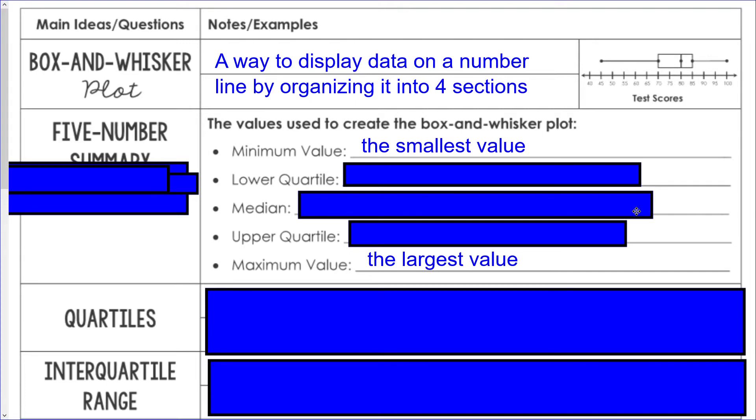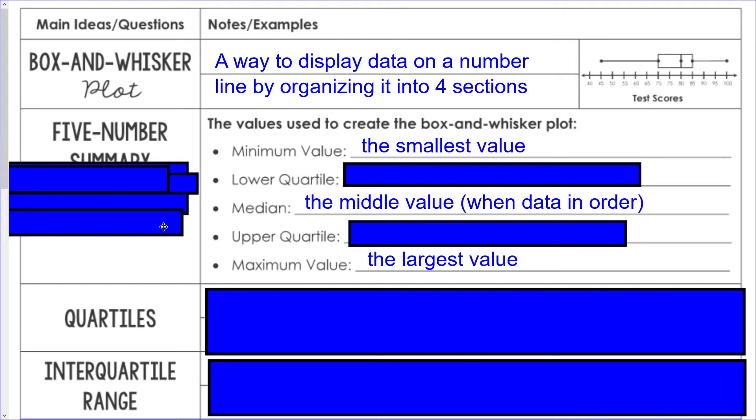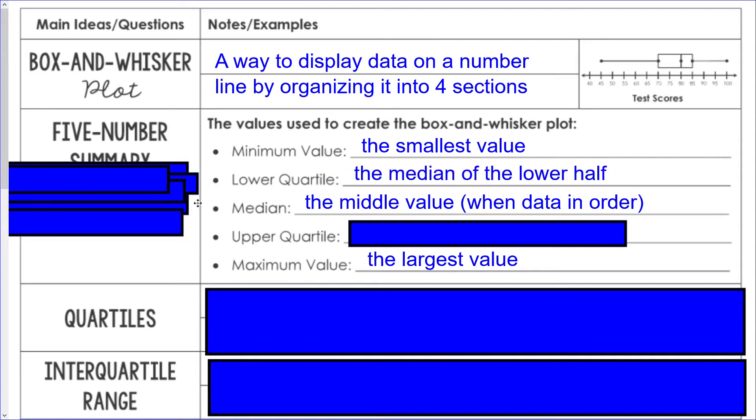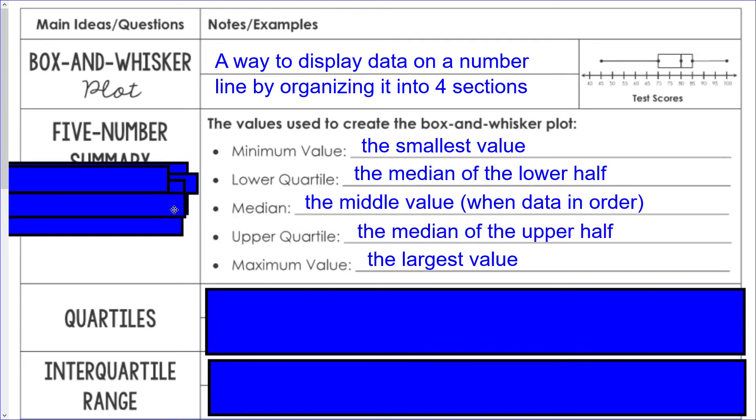The median you found previously from our measures of central tendency, so that's the middle value when the data is in order. The lower quartile is the median of the lower half, and the upper quartile is the median of the upper half of the data only.